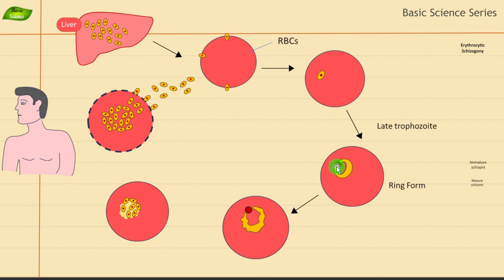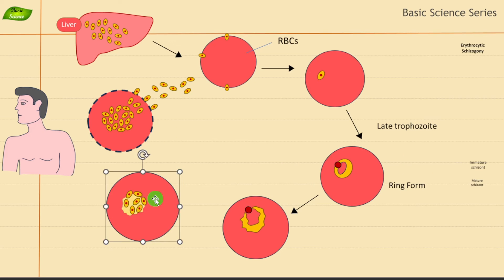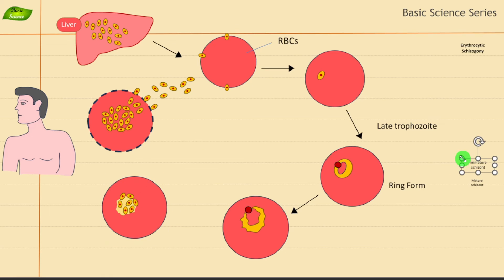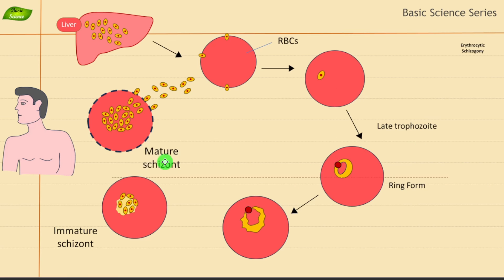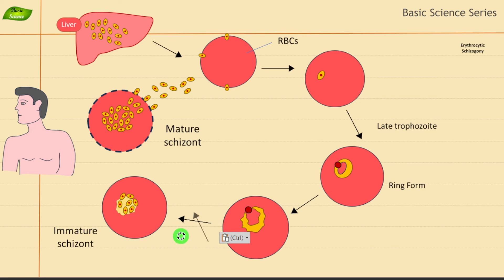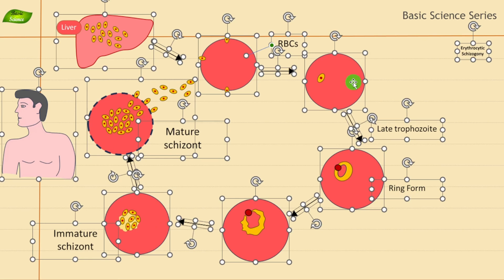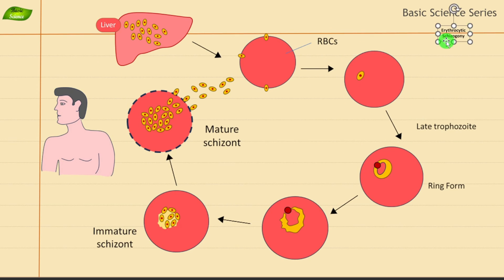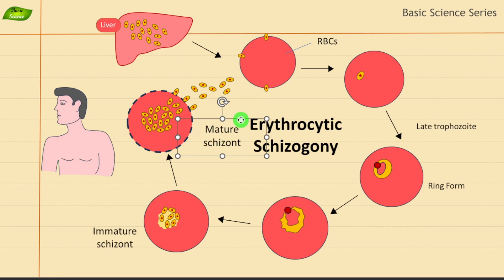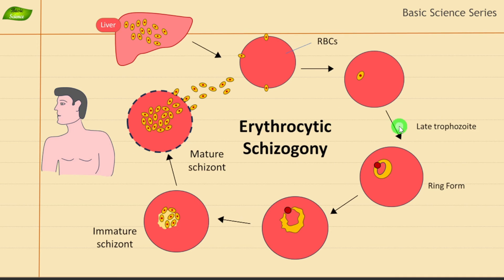The parasite also does surface modification at this stage for immune protection, and it retains the apical complex structure. Moving on to the schizont stage: after early and late trophozoite, you have the immature and mature schizont structures. This is the mature schizont and this is the immature one. The cycle moves from immature to mature schizont, then moves upward. The cycle is labeled erythrocytic schizogony in the center.